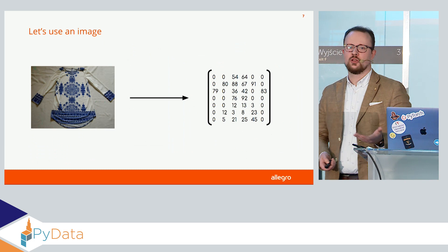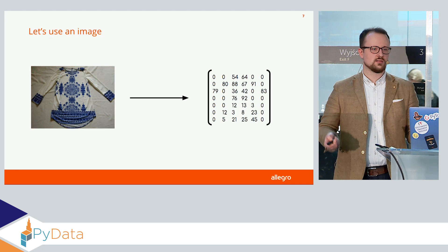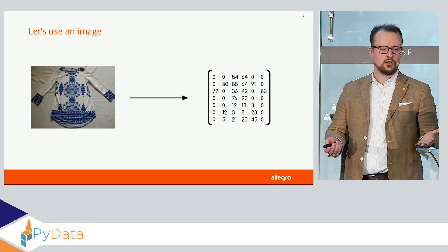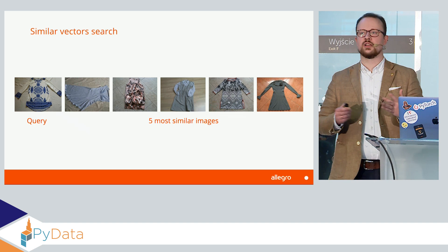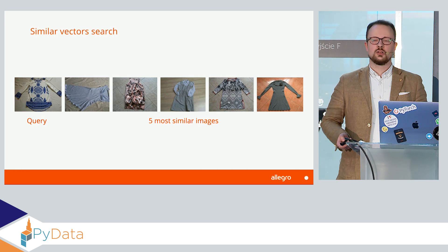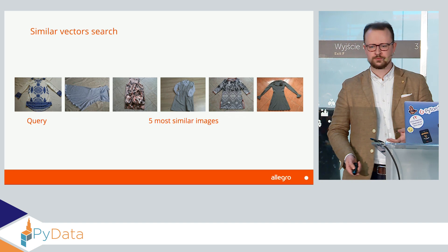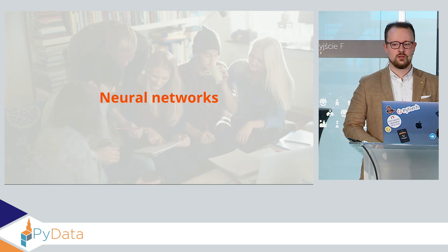Since we have a picture, we can obviously use it. We can represent a picture as a tensor of three RGB channels — this is a simplified diagram for one channel — and we could use this to find the most similar images in our database. For this dress, we get five similar images, and I would say they all have just one thing in common: they're all lying on a really ugly floor. Nothing more. Since just the pixels are not enough, we can use neural networks and see if that helps.